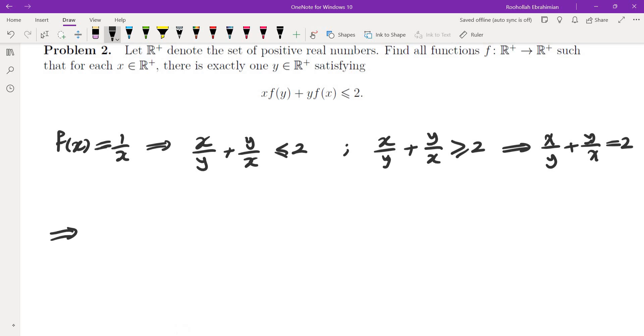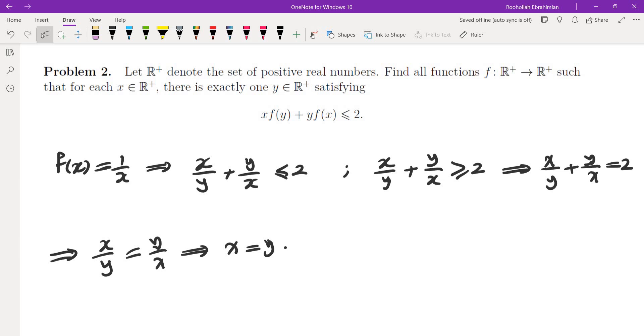And this is the equality case for AM-GM, which means x over y and y over x are the same, which means x and y are the same. This is nice because we also use the fact that x and y are positive.